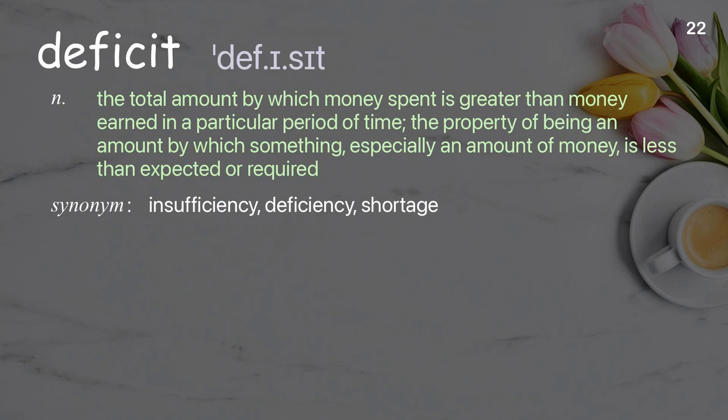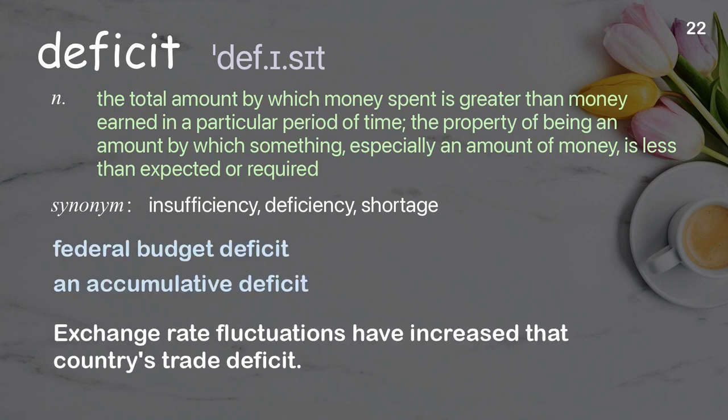Deficit. The total amount by which money spent is greater than money earned in a particular period of time. The property of being an amount by which something, especially money, is less than expected or required. Examples: federal budget deficit, an accumulative deficit. Exchange rate fluctuations have increased that country's trade deficit.